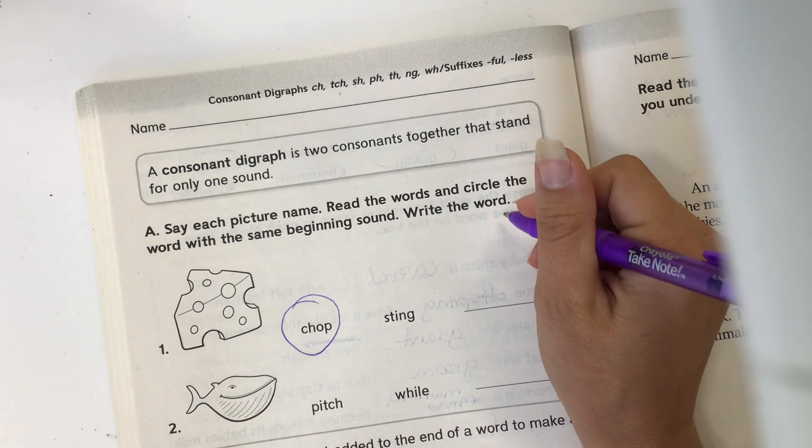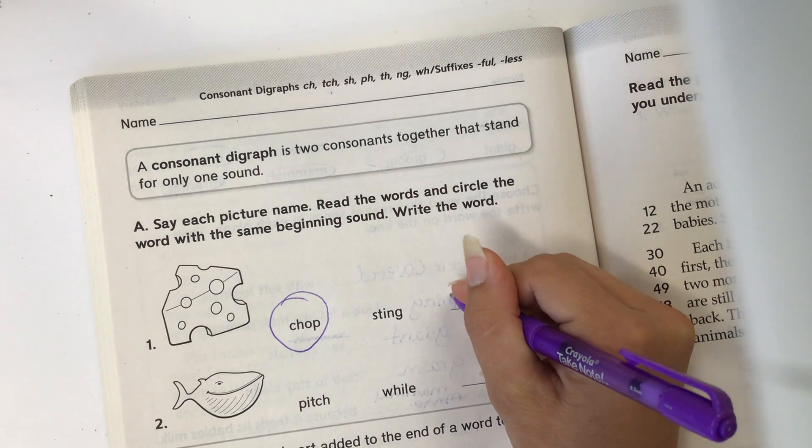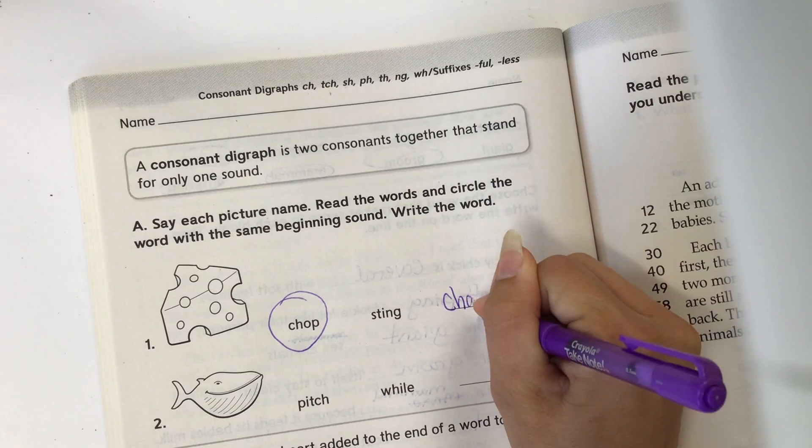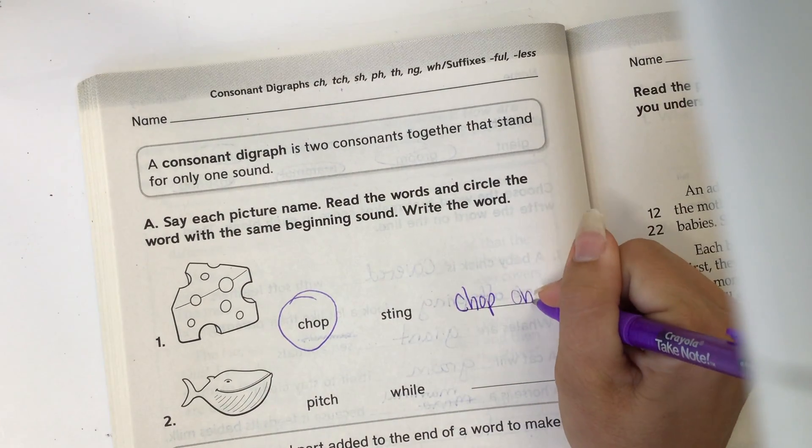Now when it says write the word, I'm not sure if they want us to write cheese or chop, so I'm going to do both. Chop, chop, and cheese.